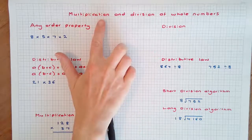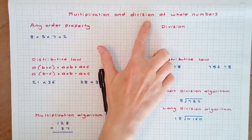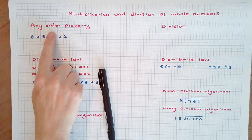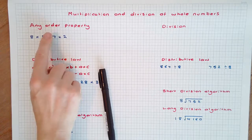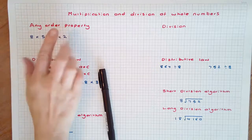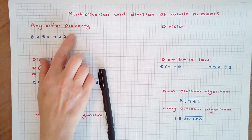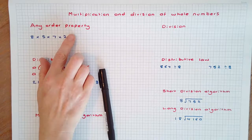In this video, we're going to look at multiplication and division of whole numbers. The any order property for multiplication states that a list of numbers can be multiplied together in any order to give the product of the numbers. The any order property summarizes the commutative and associative laws for multiplication.